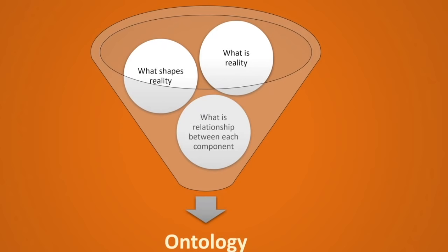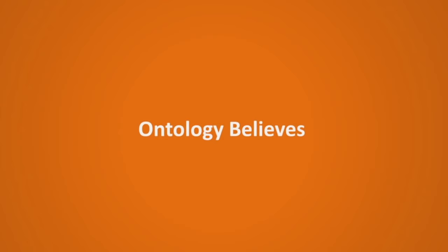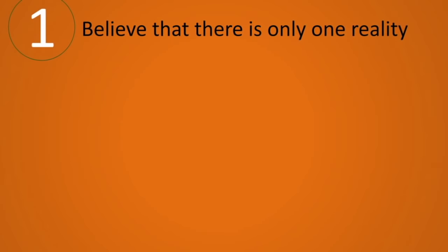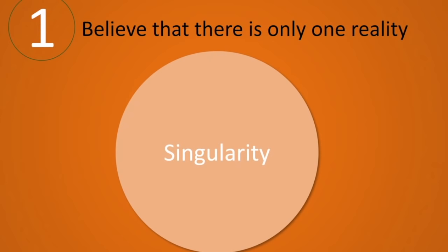To make it very simple, ontology is telling us about what is reality. There are many beliefs available for ontology, but here I am taking only three major beliefs. The first belief is that there is only one reality — it is called singularity. This means there is only one universal truth or one universal set of solutions to any problem, and this reality exists independently of how perceivers perceive it.